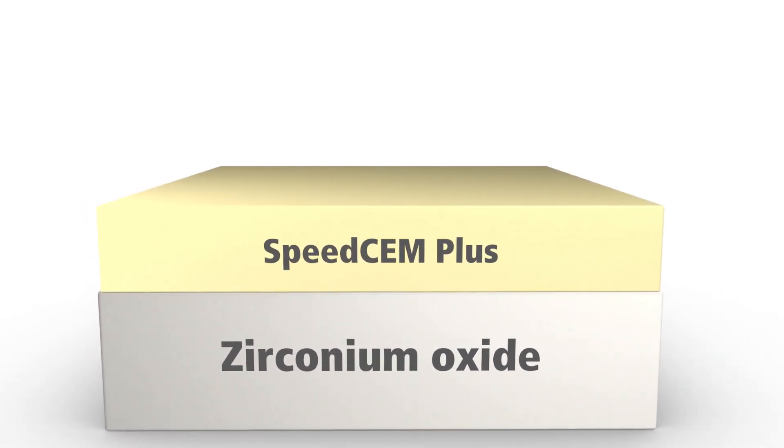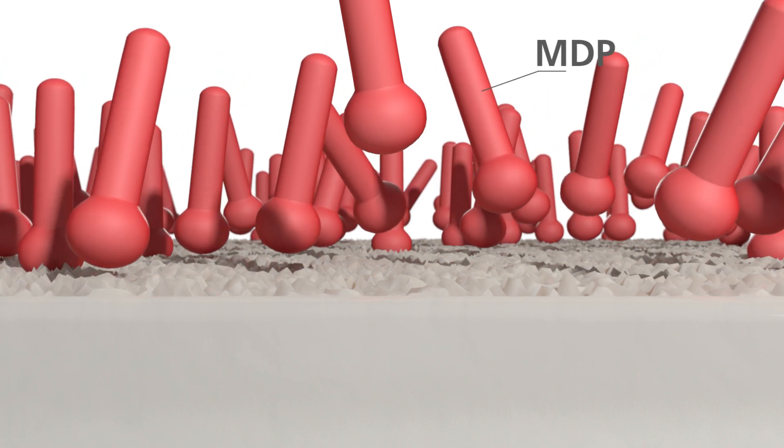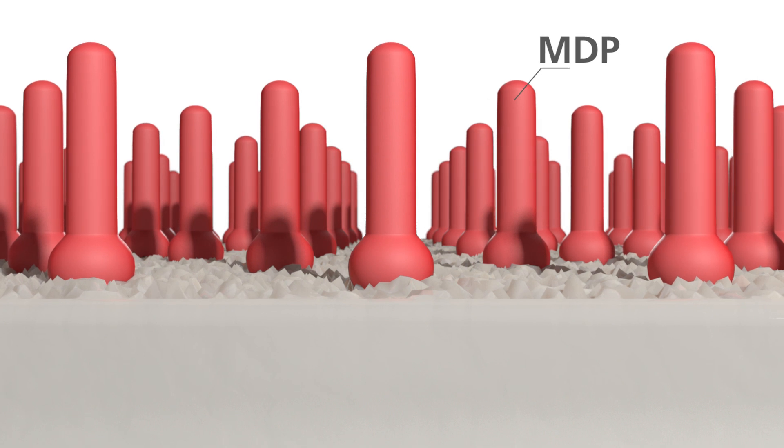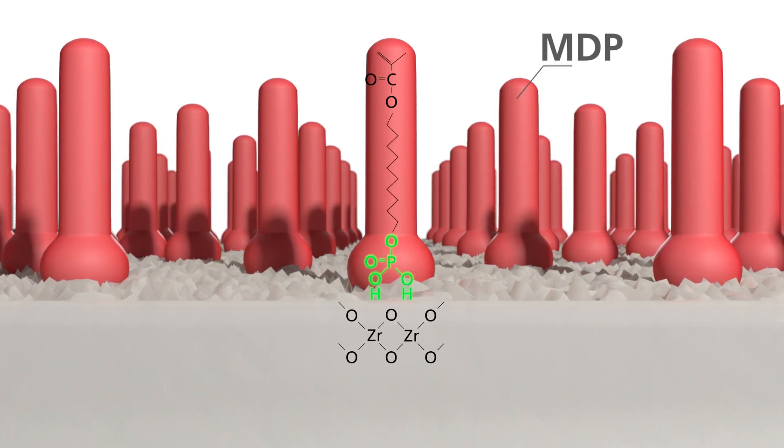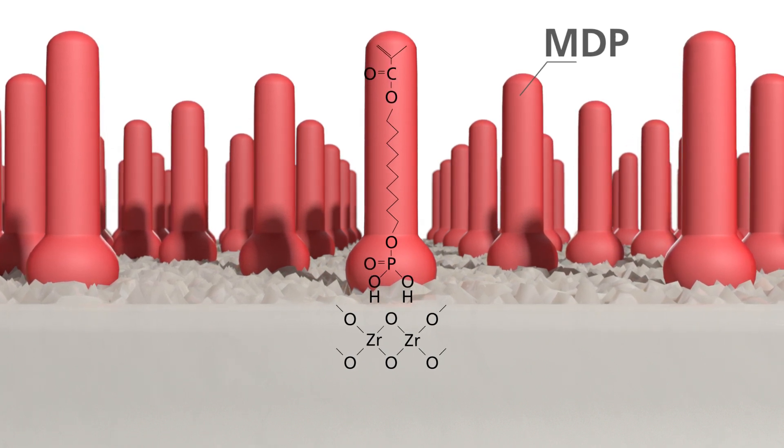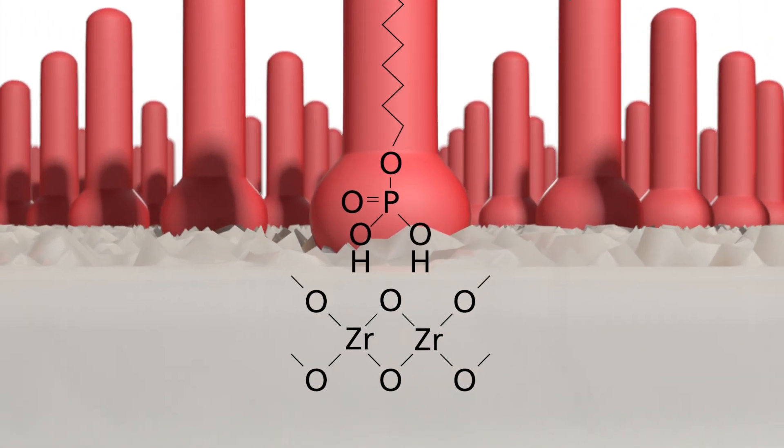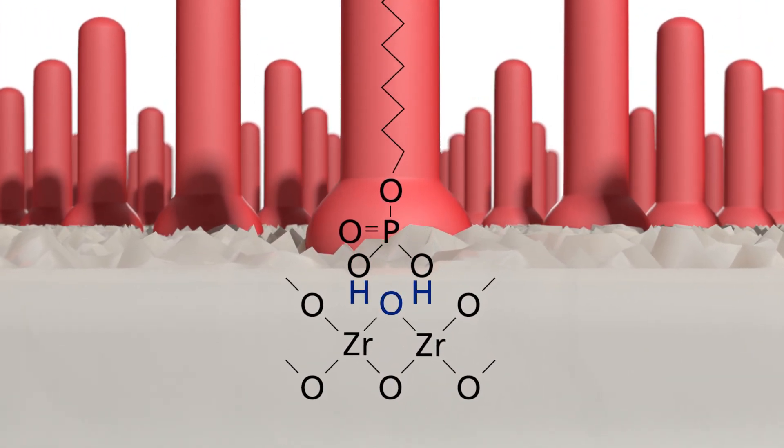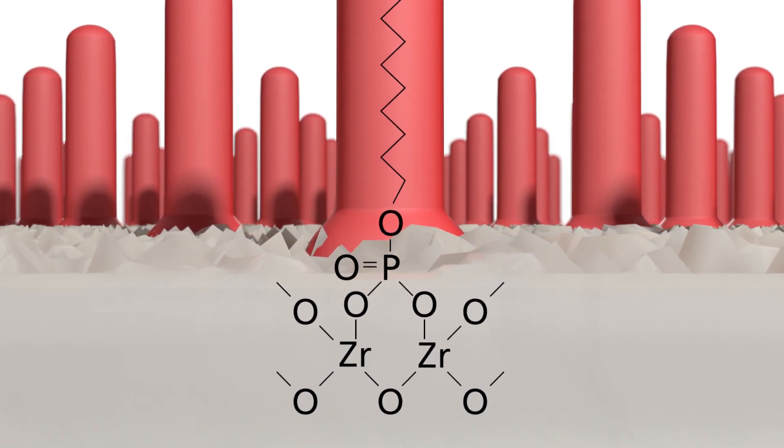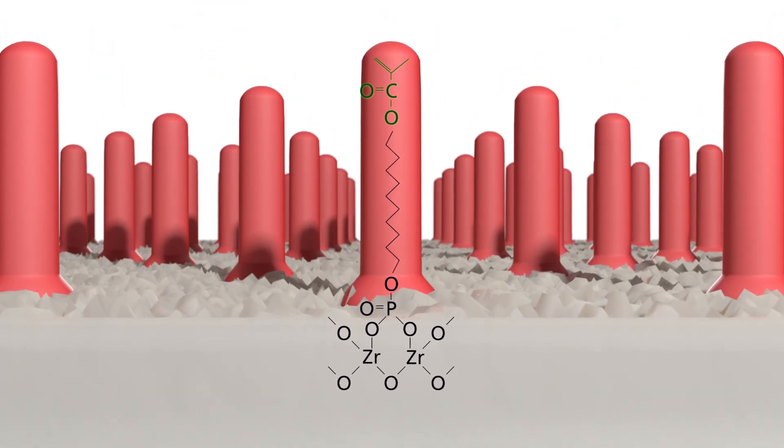The adhesive monomer MDP in the material starts exerting its effect on the zirconium oxide surface as soon as it's applied. The monomer consists of a phosphoric acid group and a methacrylate group. The phosphoric acid group acts as the bonding agent on the zirconium oxide surface, reacting with oxygen on the zirconium oxide to form a very strong chemical bond. The opposing methacrylate group enables connection with the other components in the cement.